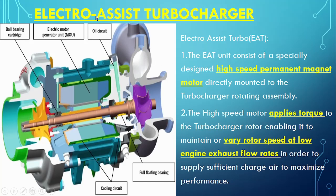The answer to what is an electro assist turbocharger lies in its name — 'electro assist' means it is providing assistance to the turbocharger. Its short form is EAT. The EAT consists of a specially designed high-speed permanent magnet motor. Looking at the diagram, we have the compressor side, the turbine side, and the permanent magnet acting as a motor — directly mounted to the turbocharger rotating assembly.